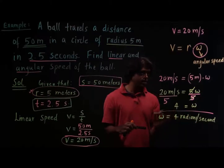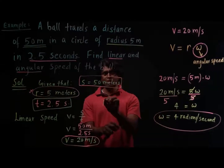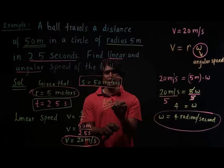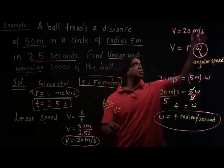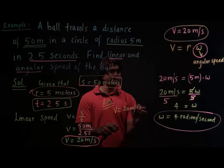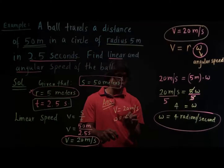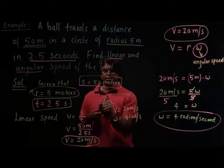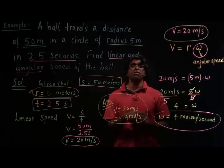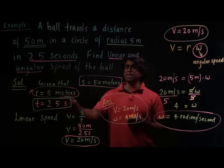Our final answer is: linear speed v is 20 meters per second, and angular speed omega is 4 radians per second. This is how we find linear and angular speed when the distance traveled, time, and radius of the circular path are all given.